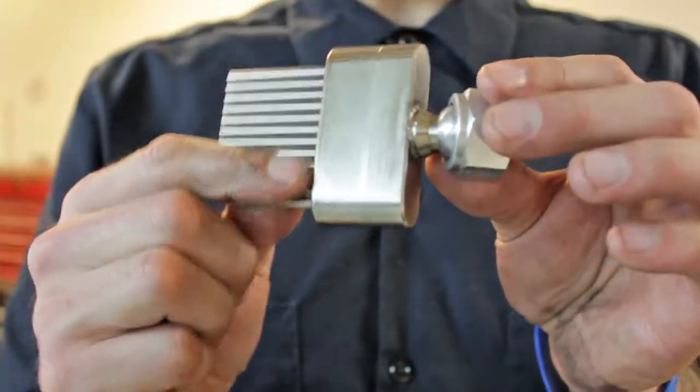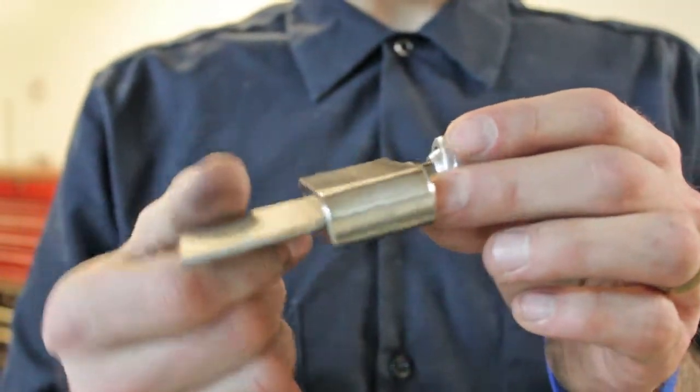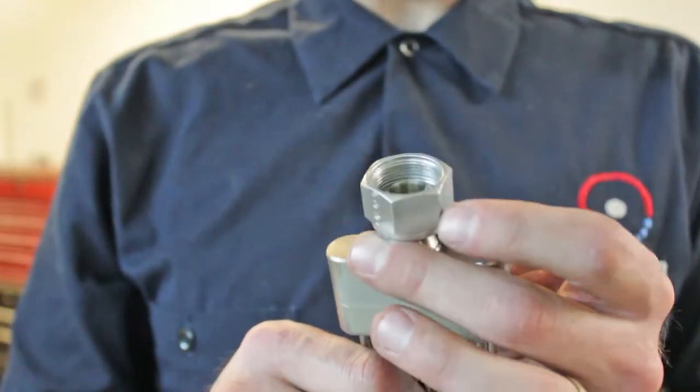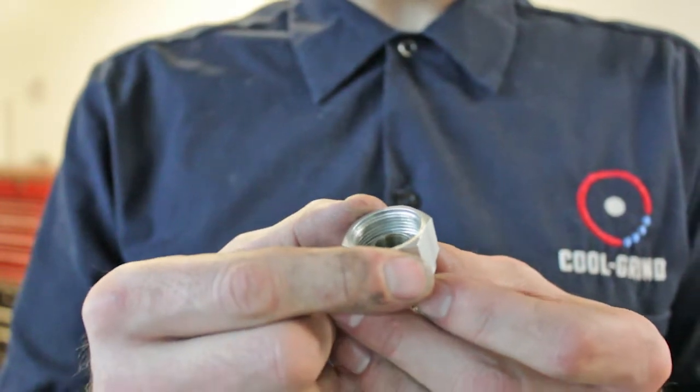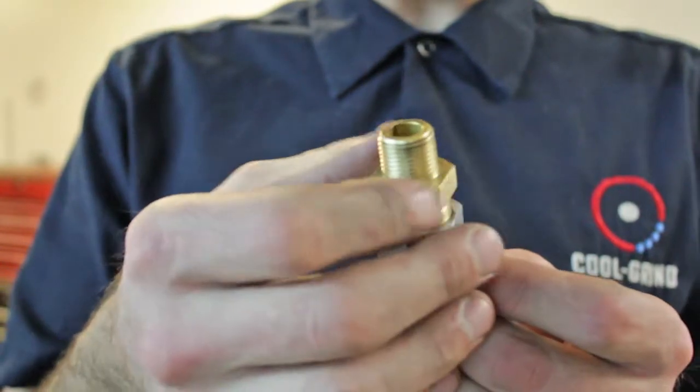You've also got a swivel ball here for any adjustments that need to be made while this is on the machine. This nozzle is compatible with our half inch nozzle tube system. We've got a female thread here that's seven-eighths twenty. We have adapters that will convert this into a three-eighths male.